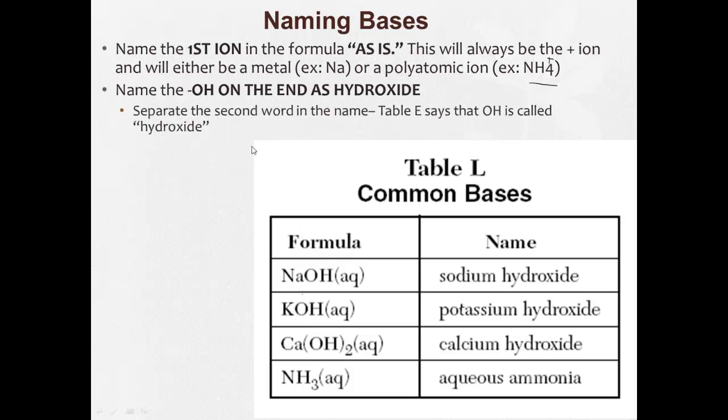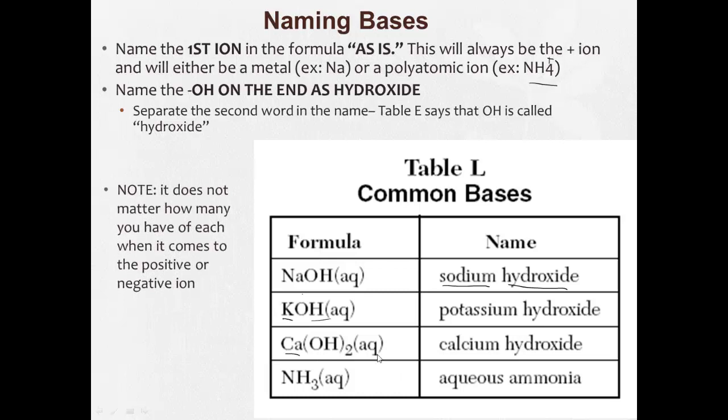So if it's like NaOH is sodium hydroxide. Two separate words. KOH, potassium hydroxide. Ca(OH)2, calcium hydroxide. It doesn't matter how many you have of each when it comes to the positive or the negative ions. We never use prefixes when we're naming bases.